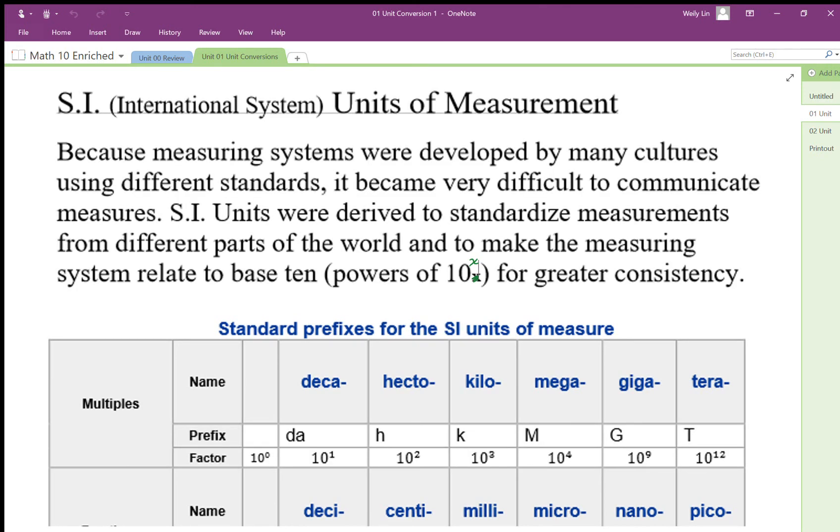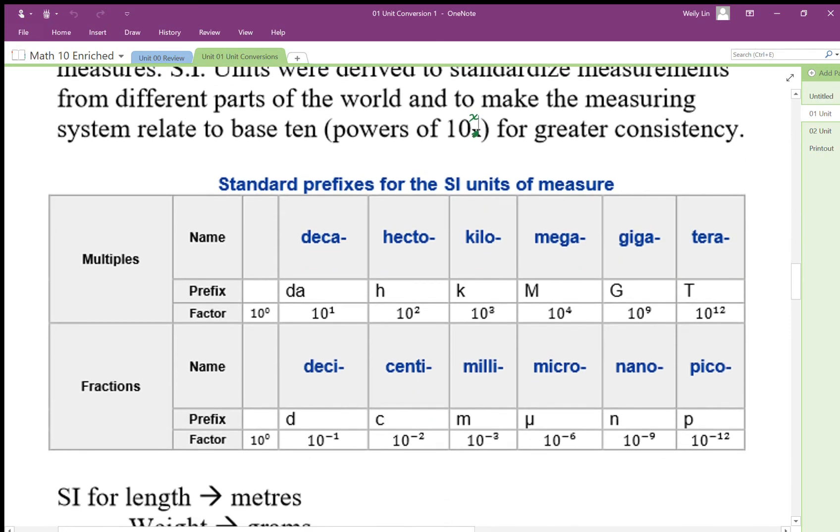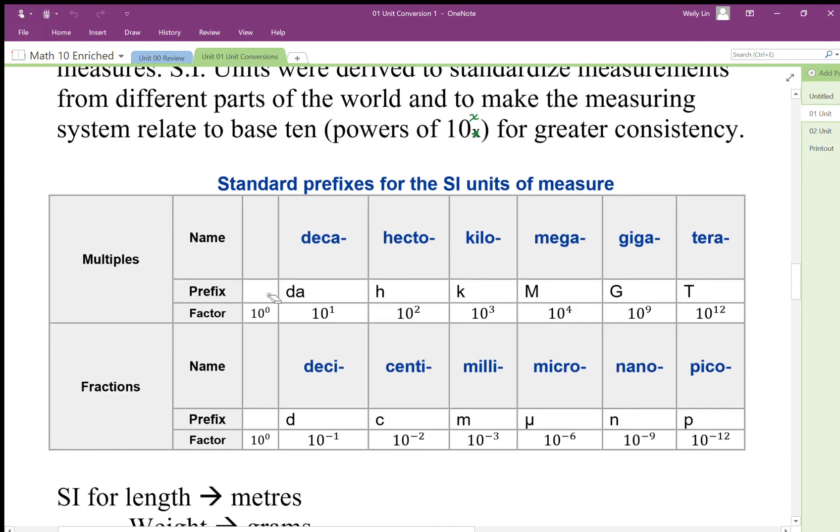The standard prefixes for the SI units of measure are for powers of 10. So 10 groups of 10 are deca, groups of 100 are hecto, groups of 1000 are kilo.